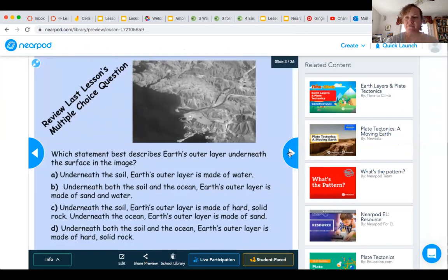I told you that we are at the end of each lesson, we're doing a multiple choice question. And this was the end of lesson 1.3. So the question says, which statement best describes earth's outer layer underneath the surface in the image.